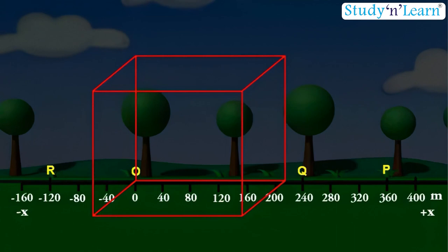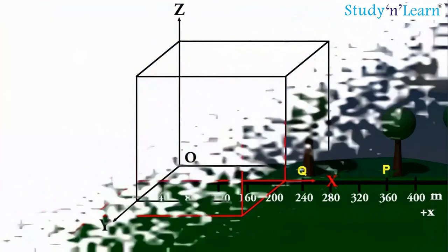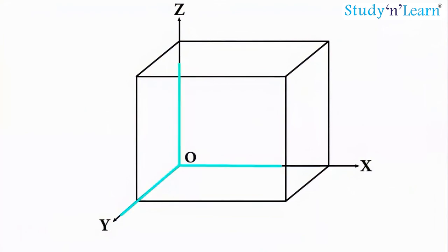It is convenient to choose a rectangular coordinate system consisting of three mutually perpendicular axes, labeled X, Y and Z axis. Point of intersection of these three axes is called origin, O, and serves as the reference point.